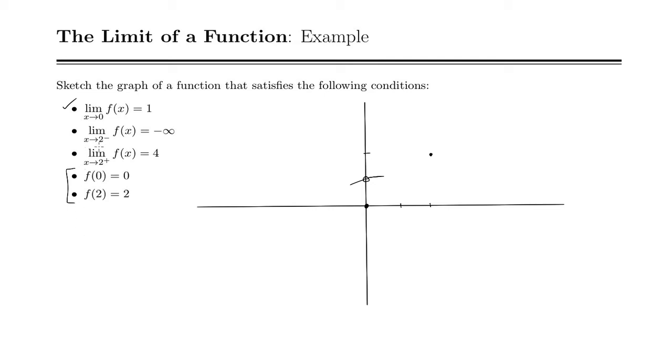Now as x approaches 2 from the left, our function is approaching negative infinity. So that means we'll have kind of an asymptote down here. From the left, we're going down to negative infinity, and from the right, we're going to 4. So 2, 3, 4. It's got to be empty because we're filled in right there, and then just come into that spot.